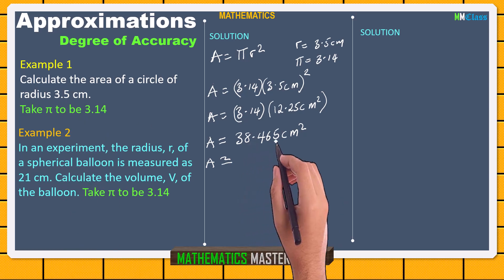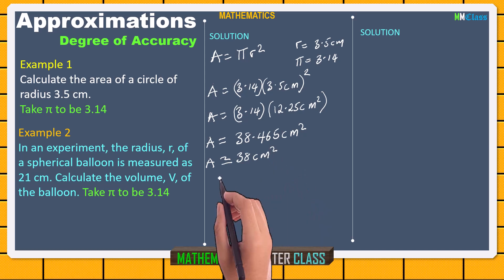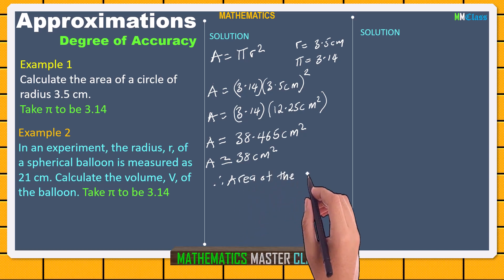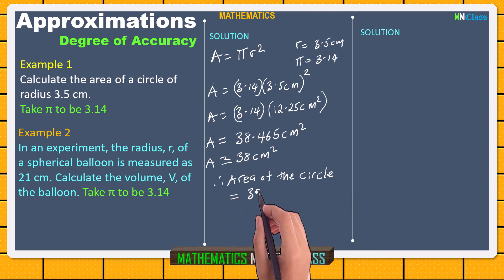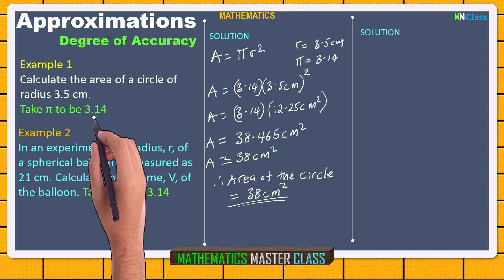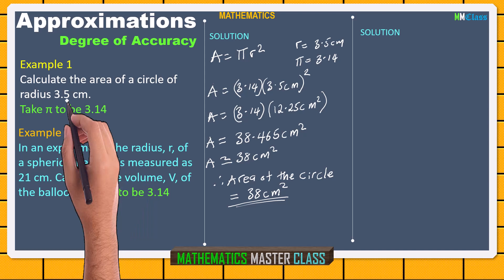So if you write 38.465 cm squared in two significant figures, it gives you 38 cm squared. Therefore, the area of the circle is equal to 38 cm squared. Remember, pi is a rounded value — it is not part of the parameters. It is a given, known value. The only parameter in the question is the radius, which is 3.5 cm.